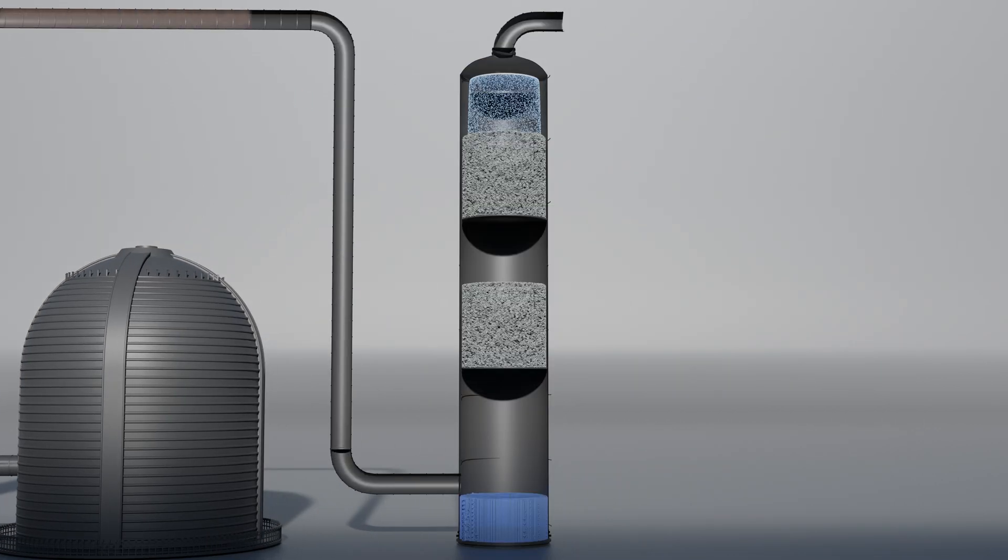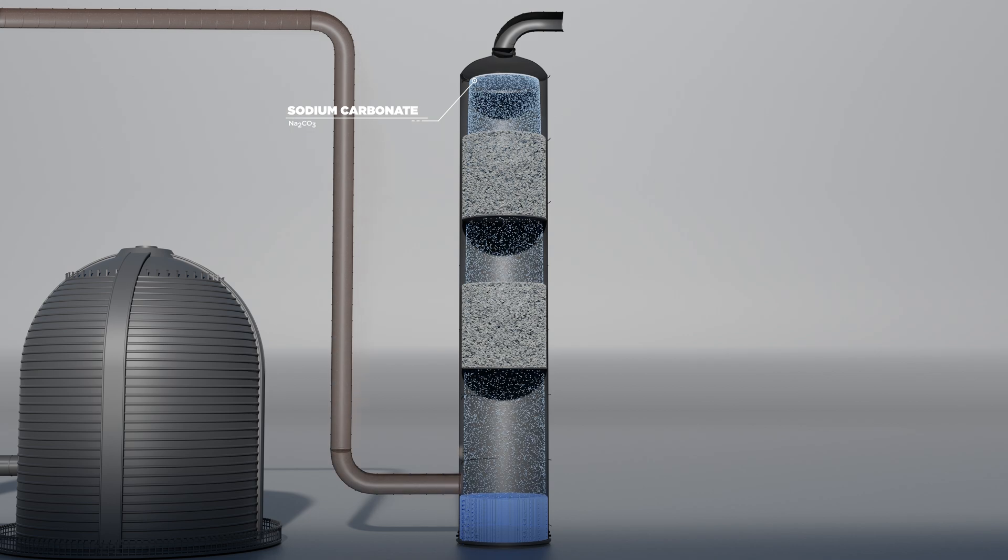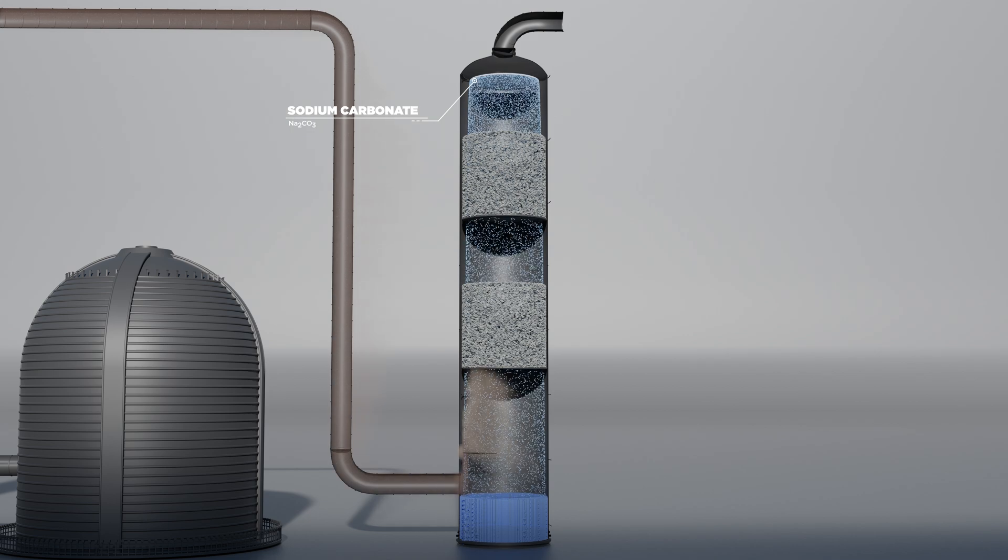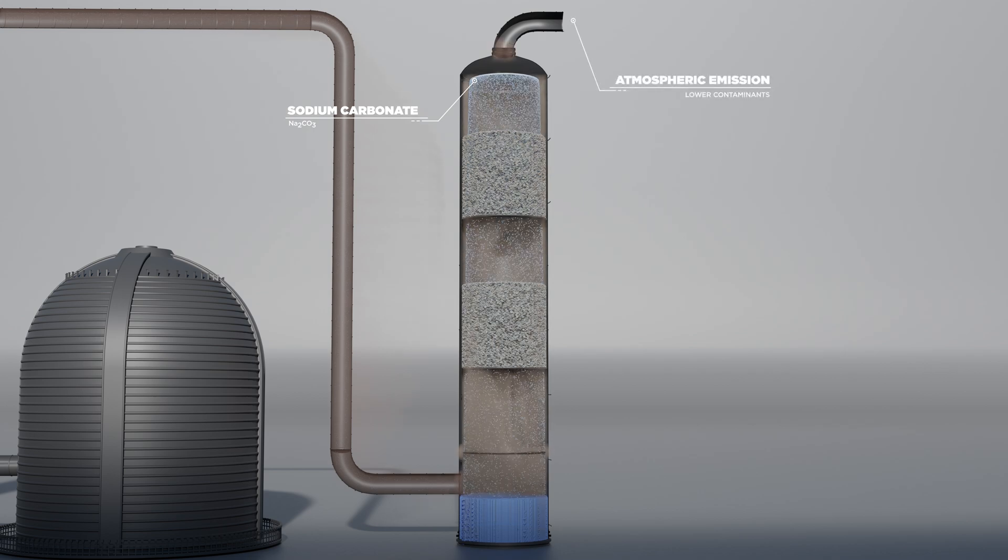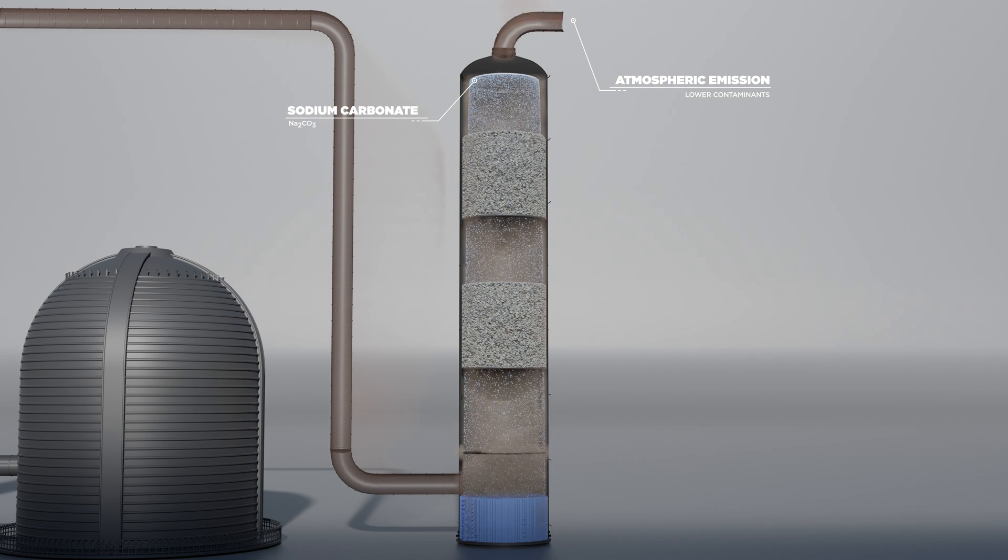The unabsorbed gases in the third stage have residuals that can generate acid rain if sent to the atmosphere. In this way, these gases are sent to another absorption tower, where they are washed with sodium carbonate solution, forming salt and water, thus reducing environmentally harmful acid emissions.